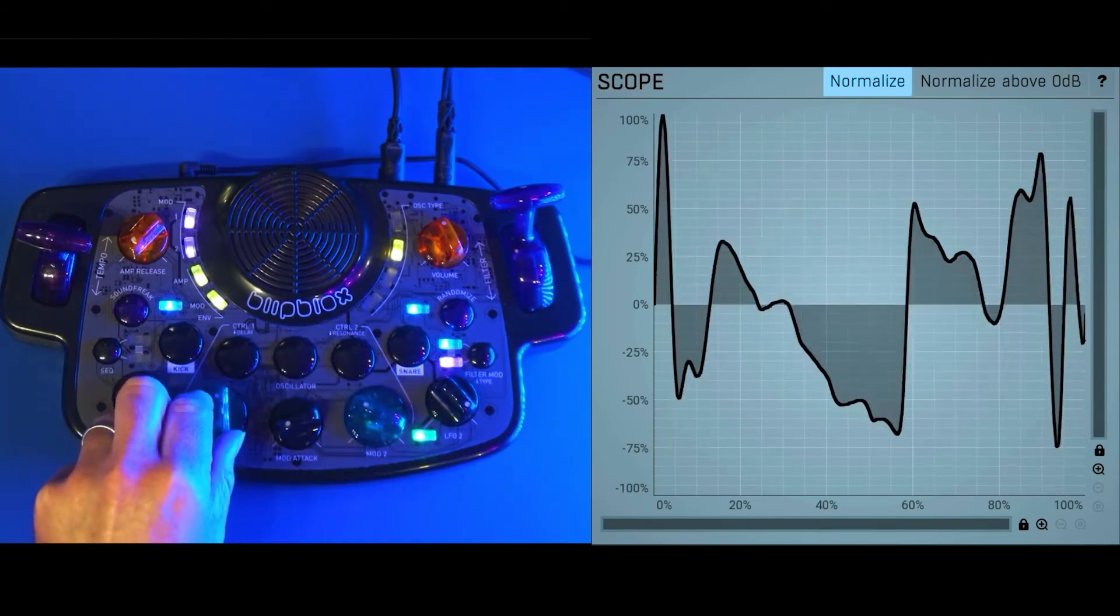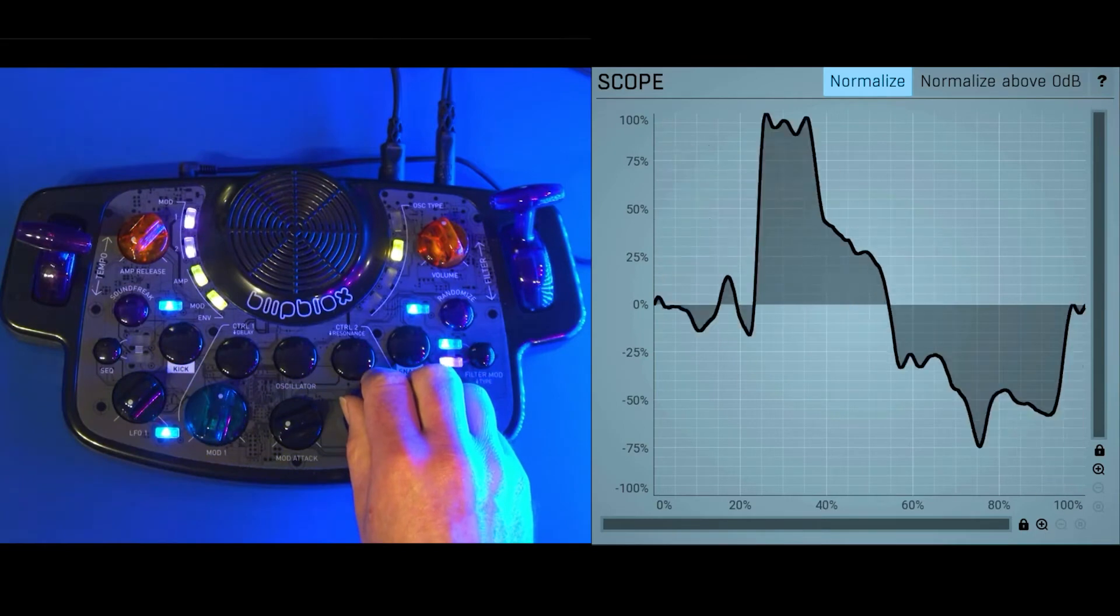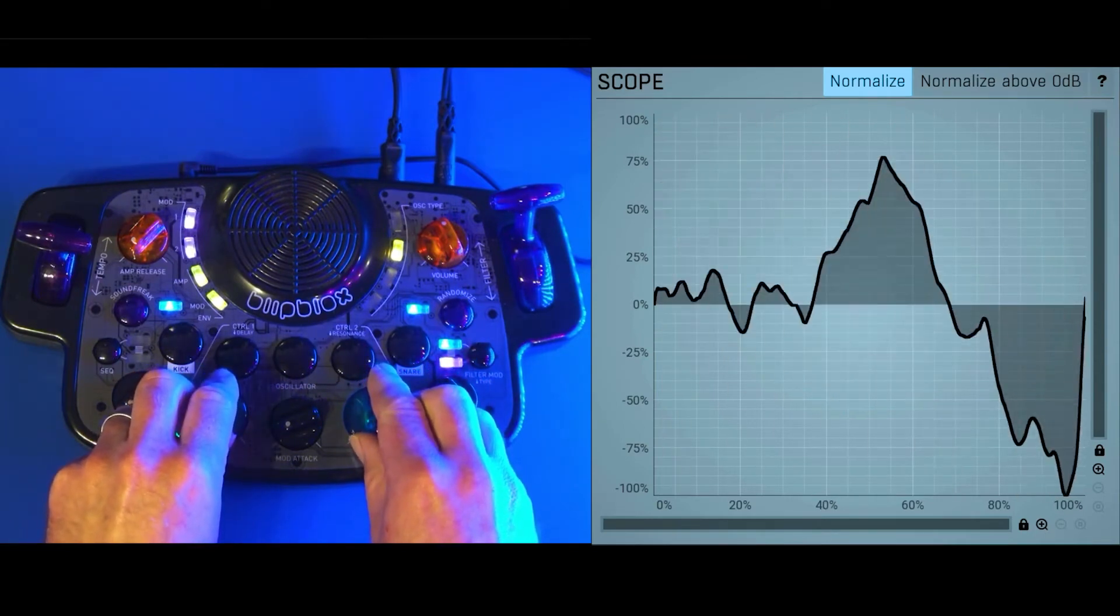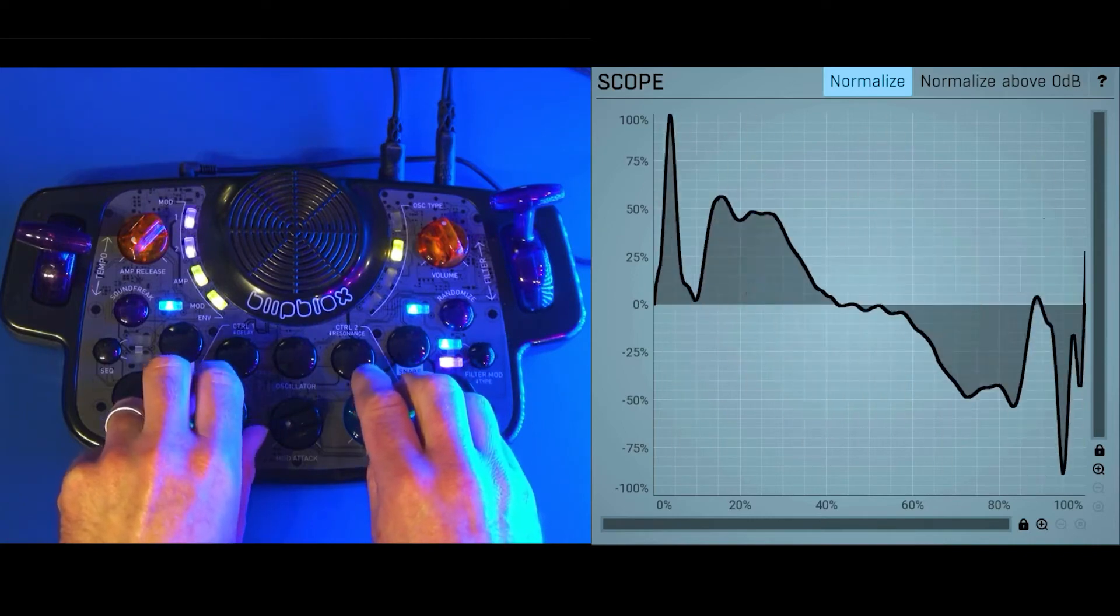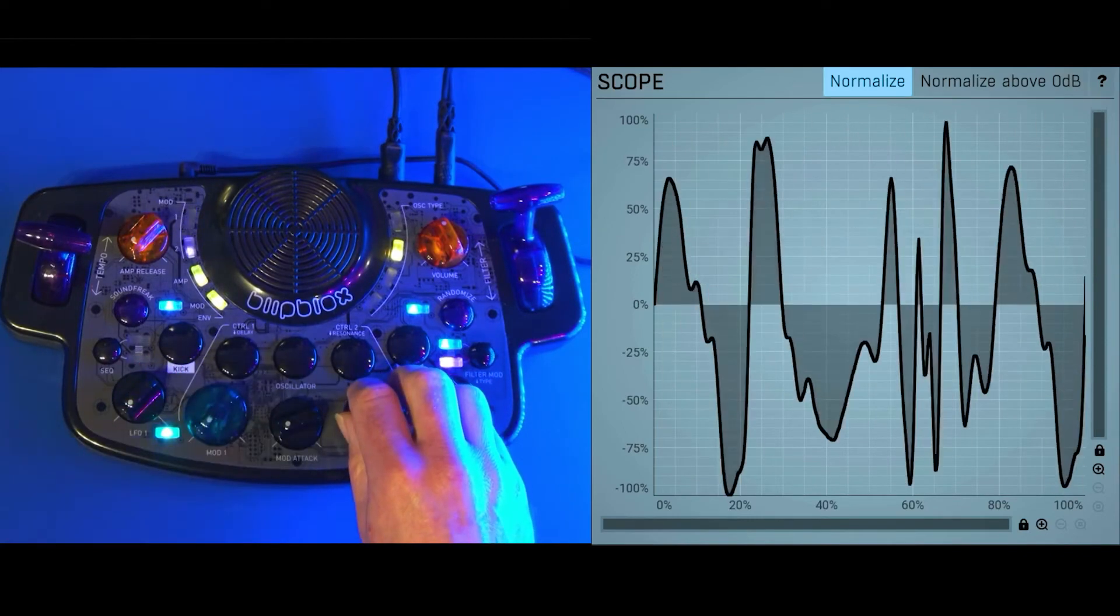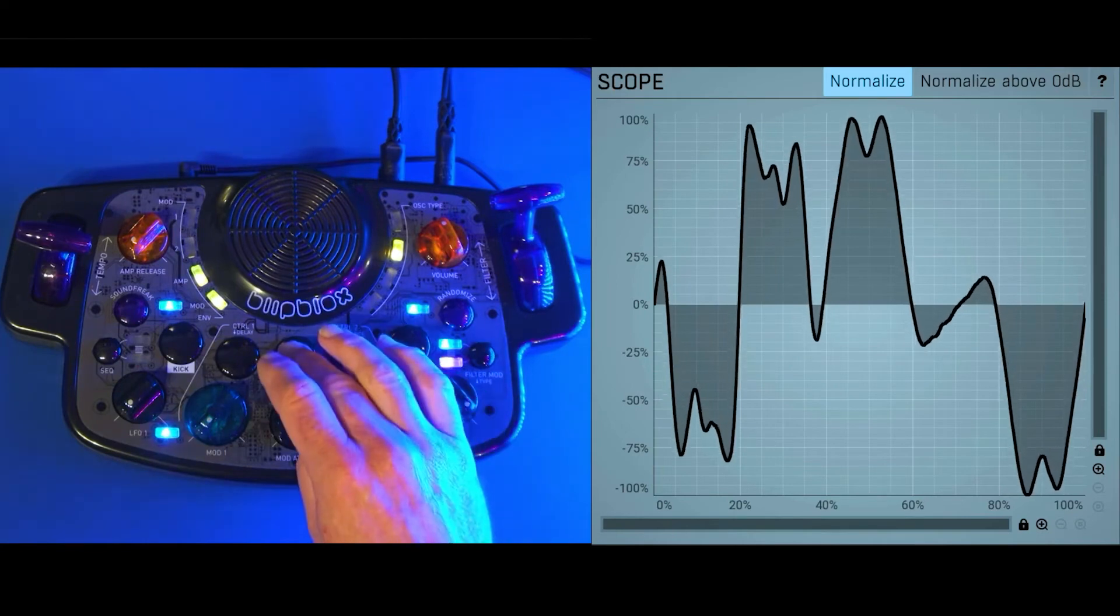With the wavetables on the After Dark, we have some different modulations like morphing of the waves, scanning of the waves, and it's basically just saying, you know, taking multiple waves and just sort of blending them together in different ways.